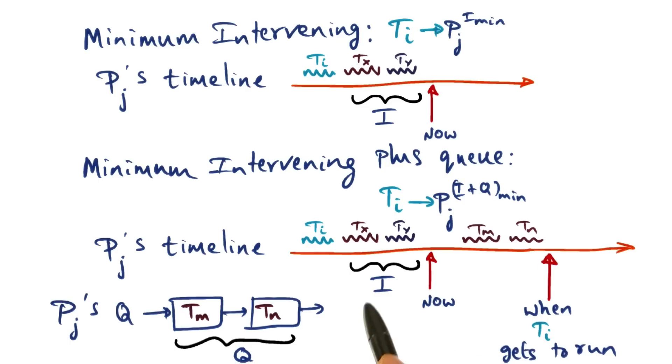time is now, but by the time ti gets to run on the processor pj, tm and tn would also have run on the processor.